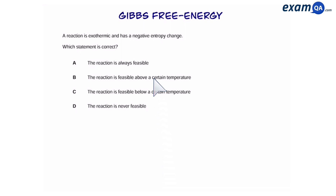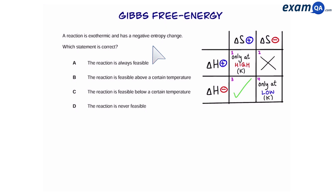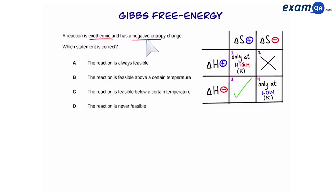Here's an example of a multiple choice question. The question says we have an exothermic reaction which also has negative entropy. This falls under category four, and therefore the answer is: the reaction will only be feasible below a certain temperature.